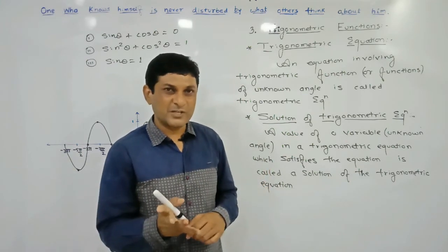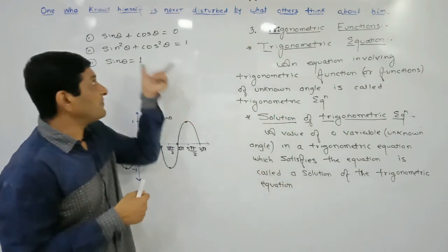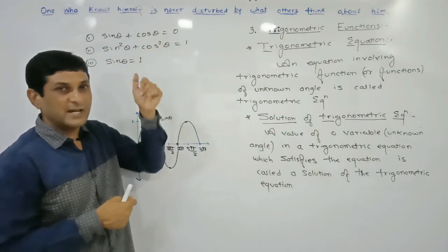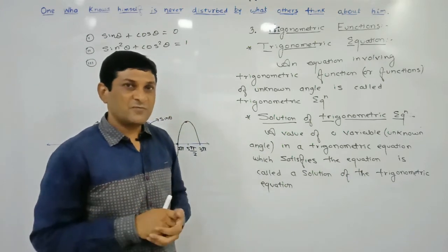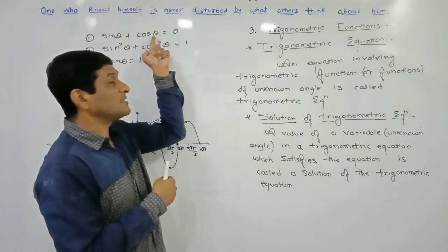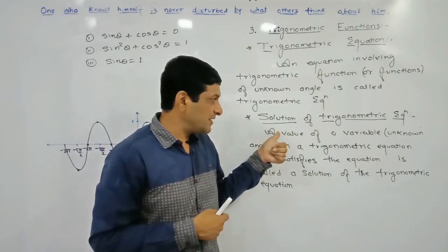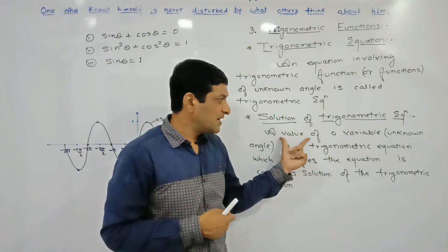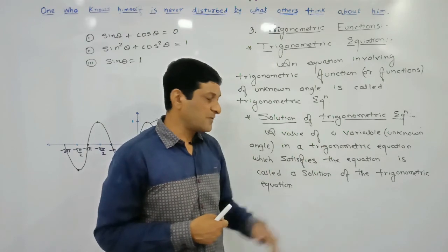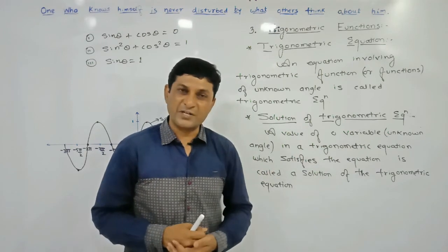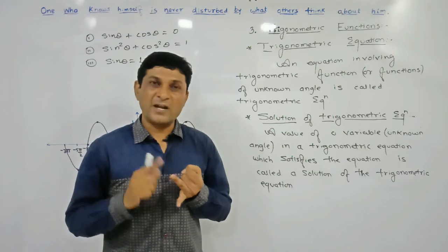Solution means the value of the variable which satisfies the equation. We say it satisfies the equation when the left-hand side and right-hand side become equal. In a trigonometric equation, the variable is the unknown angle θ. The value of this unknown angle which satisfies the equation is called the solution of the trigonometric equation — also called the root or zero of the equation.